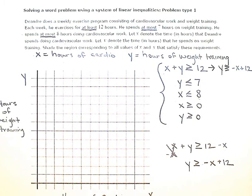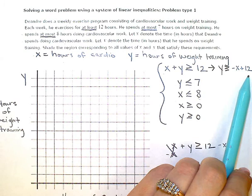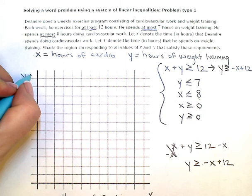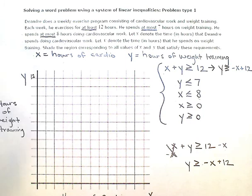And so my Y intercept is 12. So I have 1, 2, 3, 4, 5, 6, 7, 8, 9, 10, 11, 12 lines. So this will be 12, right, at the top. And 1, 2, I'm just going to put in a couple other numbers here. 4, 5, 6, 7, 8, 9, 10, 11, 12.